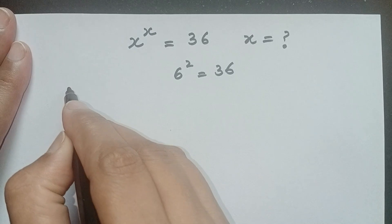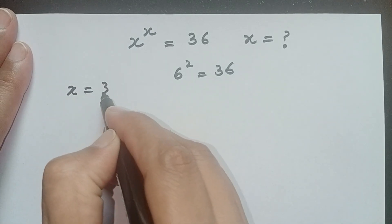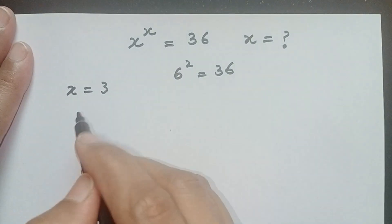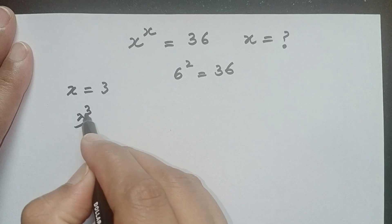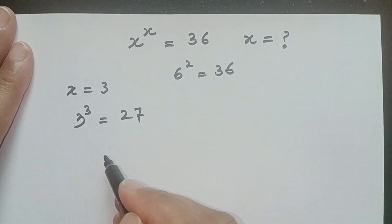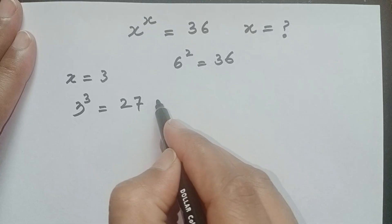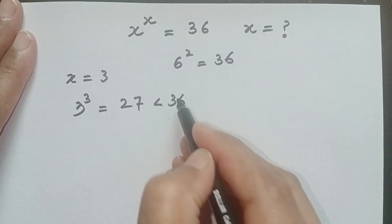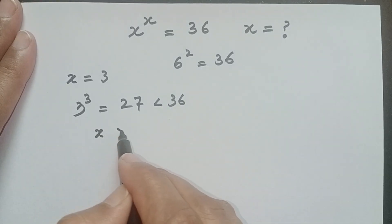So if x is equal to 3, then according to this equation, 3 power 3 is equal to 27, but 27 is less than 36. It means x is greater than 3.